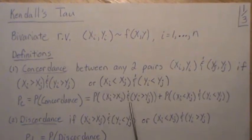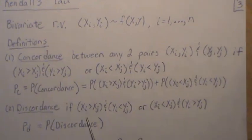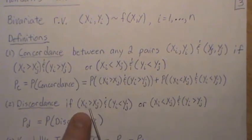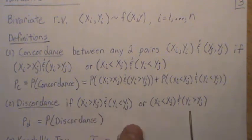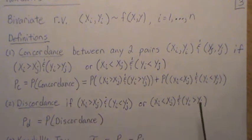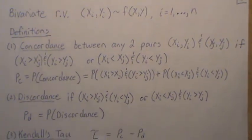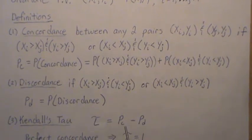The probability of concordance is just the probability that they agree. Discordance is that they disagree — the i-component is bigger than the j-component in the X's but the i-component is less than the j-component in the Y's, or the opposite: i is less than j in X but i is greater than j in Y. PD denotes the probability of discordance.